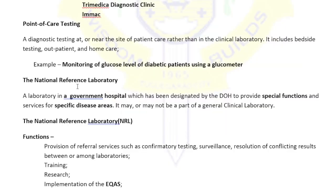The National Reference Laboratory (NRL) is a government hospital designated by the DOH to provide special functions and services for specific disease areas. It may or may not be part of a general clinical laboratory. One function is provision of referral services such as confirmatory testing, surveillance, and resolution of conflicting results between laboratories. Confirmatory testing establishes the accuracy and reliability of the test result.